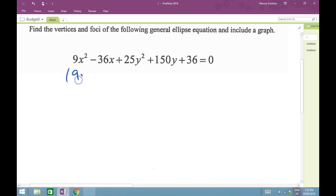So here we go: 9x² - 36x + 25y² + 150y, bring it across, becomes -36.